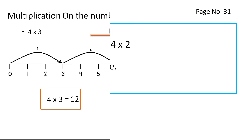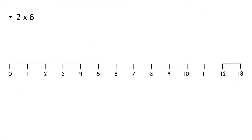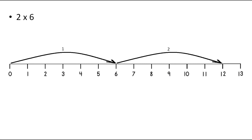Now let's solve the 'Try This' box on page number 31. The questions are: find 2 into 6, 3 into 3 and 4 into 2 using the number line. The first one is 2 into 6, which means 2 times 6. So, move 6 units at a time to the right and make 2 such moves. The first move is on 6 and the second move is on 12. Therefore, the answer of 2 into 6 is 12.